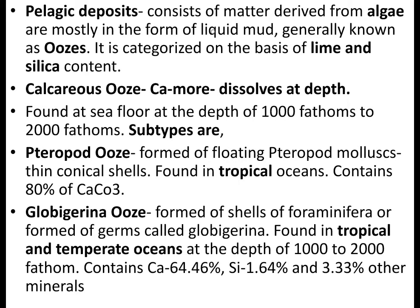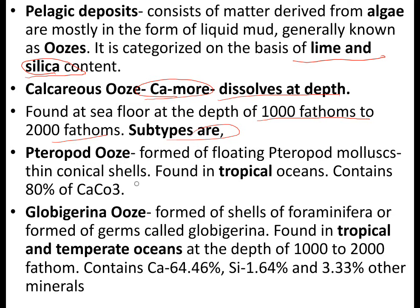Pelagic deposits consist of matter derived from algae, mostly in the form of liquid mud, generally known as oozes. These are characterized on the basis of lime and silica content. Calcareous ooze has more calcium content, dissolves at depth, and is found at seafloor depths of 1,000 to 2,000 fathoms. A subtype is pteropod ooze, formed from floating pteropod molluscs with thin conical shells, found in tropical oceans.